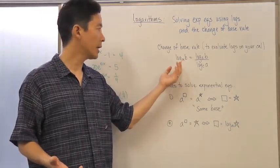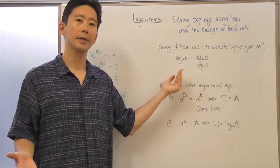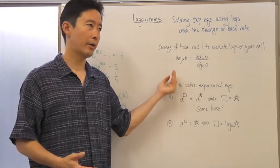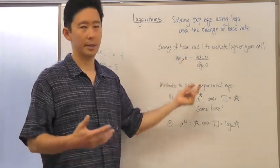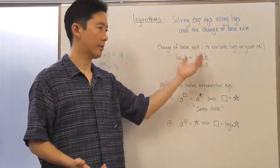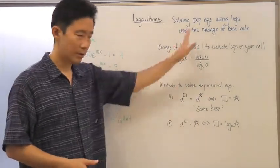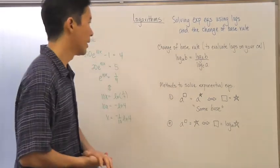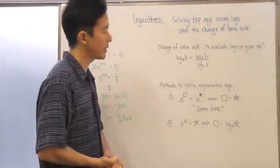How do you do it on your calculator? You need to change the base so that it's either 10 or e to come up with that decimal approximation. So there you go, that's basically it.